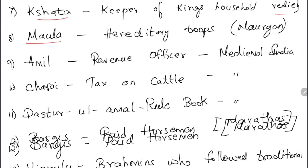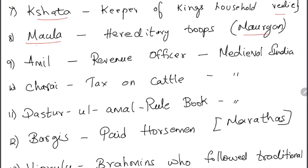Maula were hereditary troops during the Mauryan period — not medieval or Mughal as one might guess. Amil were revenue officers in medieval India, i.e., the Sultanate period. Charai was a tax on cattle during the medieval period. Dustur ul Amal was the rulebook during the medieval period.